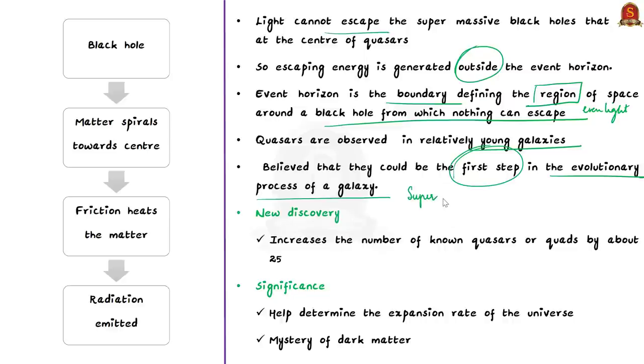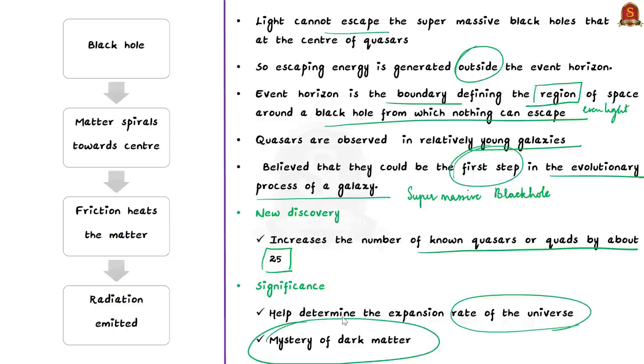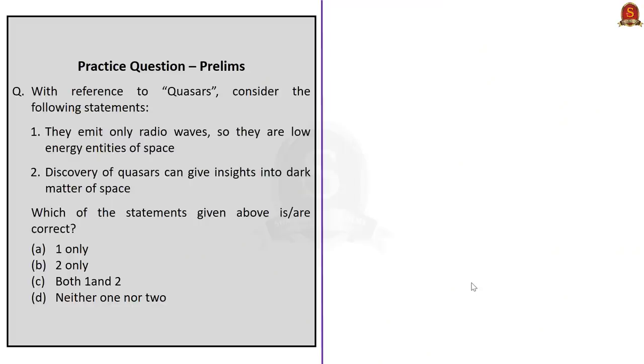Quasars are observed so far away and in relatively young galaxies and it is believed that they could be the first step in the evolutionary process of a galaxy. Perhaps the supermassive black hole at the center of a galaxy once hosted a quasar. Now coming to the article, it talks about the newly discovered quasars and this rare discovery increases the number of known quasars or quads by about 25% and also they can help determine the expansion rate of the universe in addition to addressing other mysteries like dark matter. Remember these quasars are also called as quads due to the formation structure in the sky.